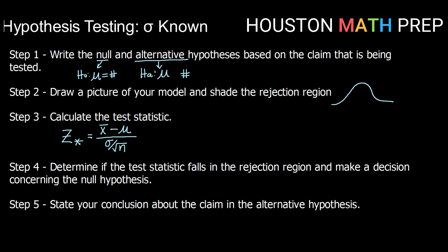Remember that σ over square root n is called the standard error of your distribution for sample means. So we're going to calculate that test statistic and then compare it to our rejection region.